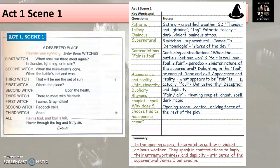Finally, my summary box. So I've come back a day or two later or at the start of my next lesson and I've summarized my notes and my keywords. Again, I've used a different color just because I found that really helpful when I've come to revise. And this is my summary. In the opening scene, three witches gather in violent, ominous weather. They speak in contradictions to imply their untrustworthiness and duplicity, attributes of the supernatural that James I believed in. So that's my summary of the opening scene. Could have maybe put a quotation, a very short quotation or two in that summary box, but I haven't today and I still have those quotes to refer to in my notes section when I come to revise.